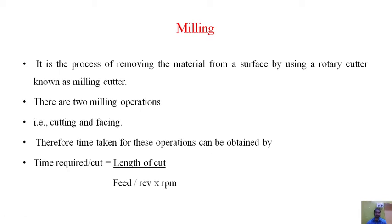Next is the milling operation. Milling is the process of producing flat surfaces — horizontal, vertical, or angular surfaces, or cutting keyways — by means of a rotating milling cutter. There are two types of milling operations: cutting (making keyways, grooves, or slots) and facing (reducing the depth of a surface). Time taken for milling equals length of cut divided by (feed per revolution × RPM). Feed per minute equals feed per revolution multiplied by RPM.